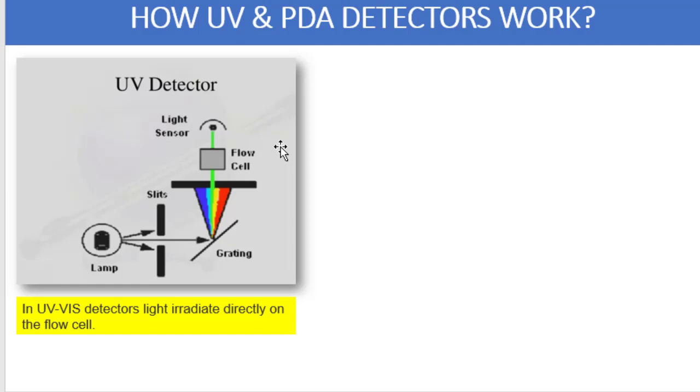The first component is the lamp. There are two lamps generally used in HPLC: one is deuterium which is the source of UV light range, and another one is tungsten lamp which is the light source for the visible range. Followed by there is a slit available. What is the function of the slit over here?